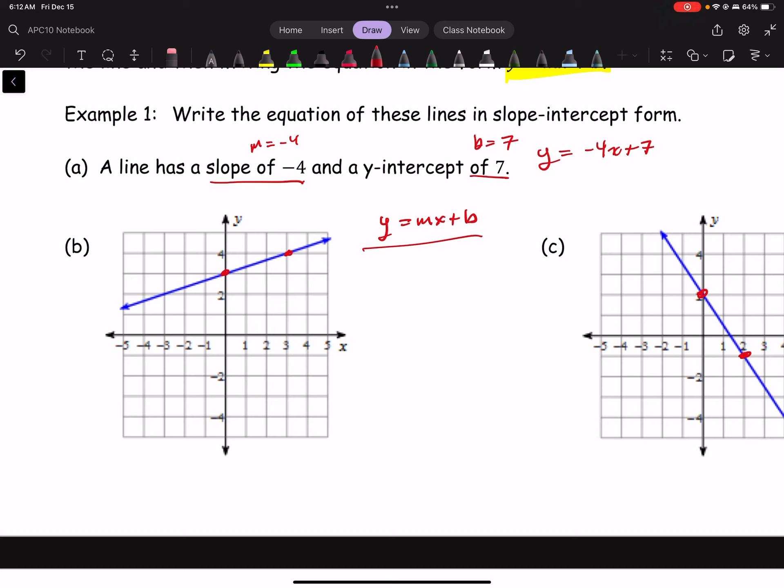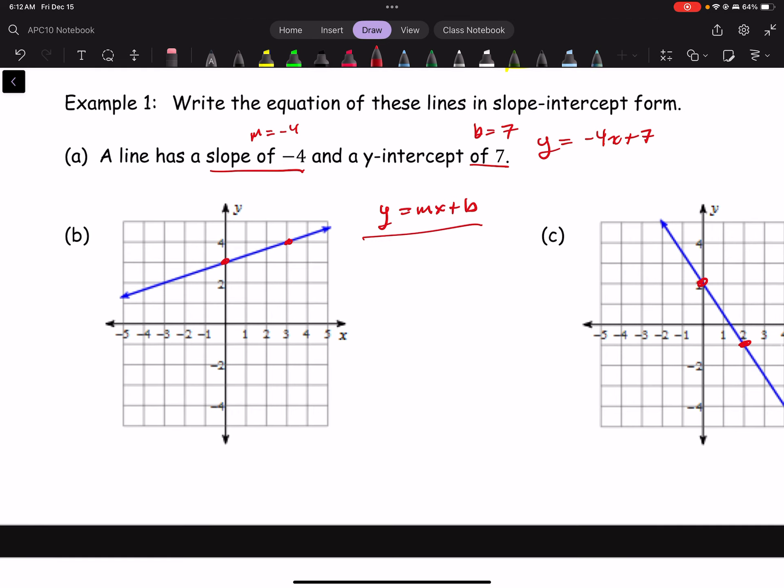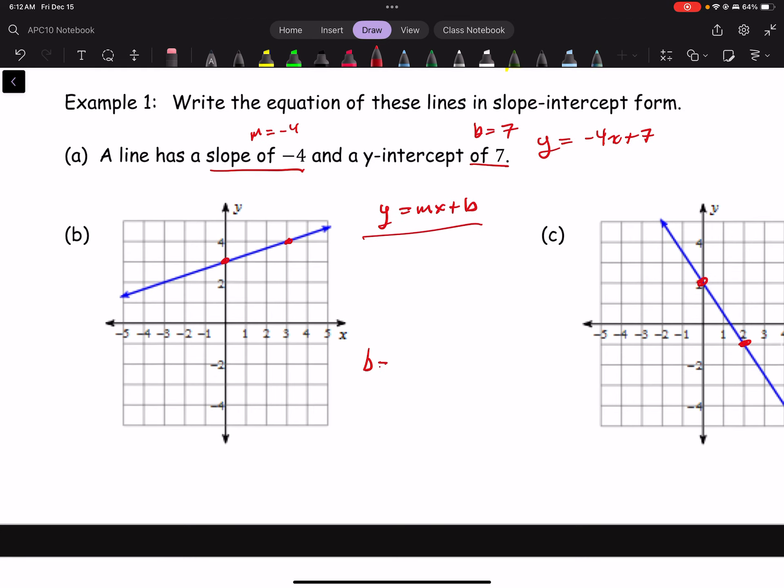Now for part b. I suppose if we are going to use the slope-intercept method, we should get the slope and the intercept. Well, the intercept is rather easy to see. It's right there. And when we say the intercept, we're talking about the y-intercept, which is 3.